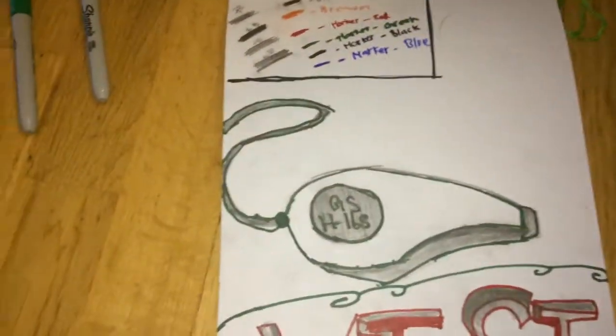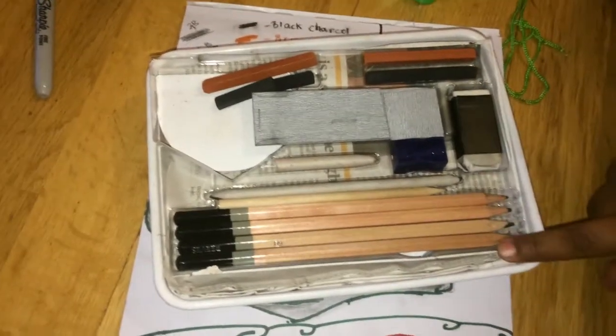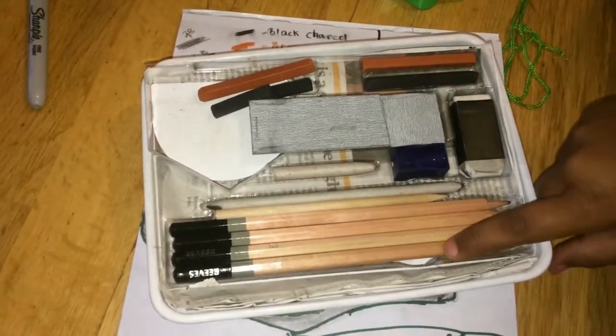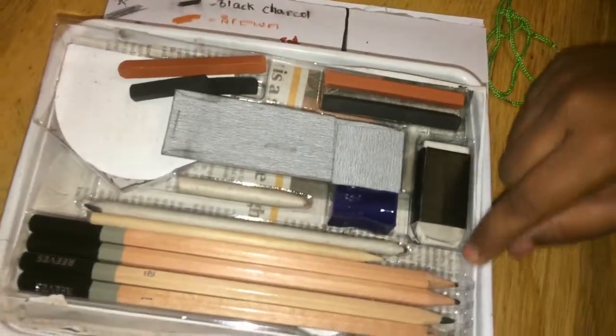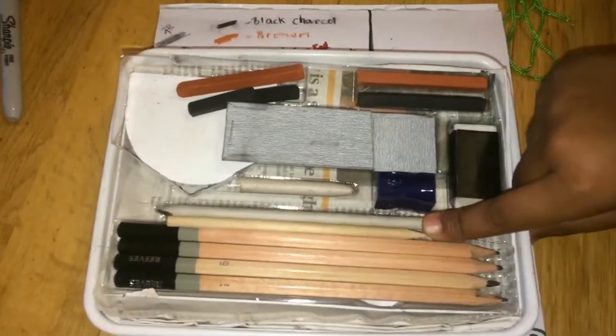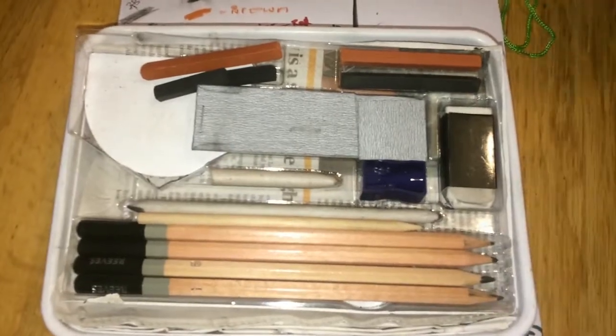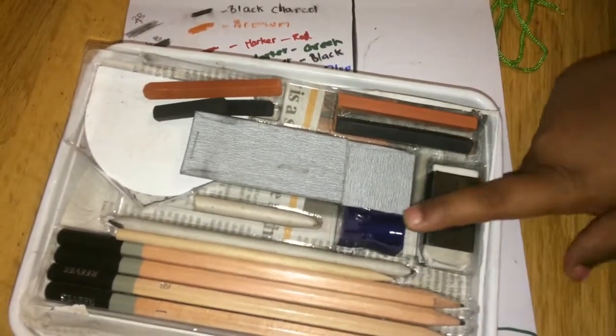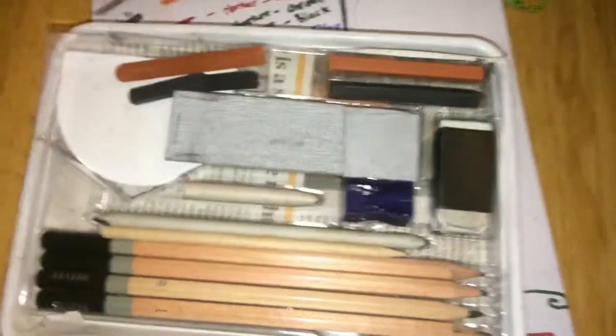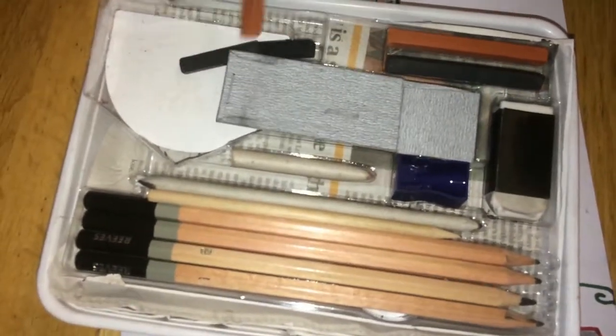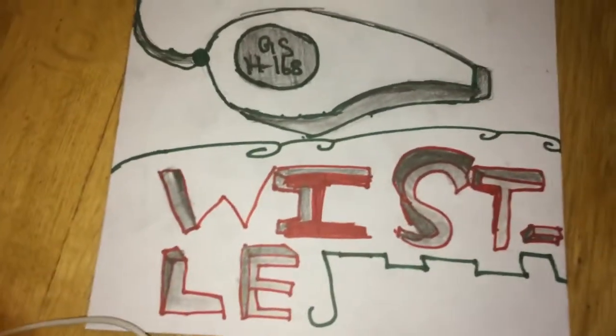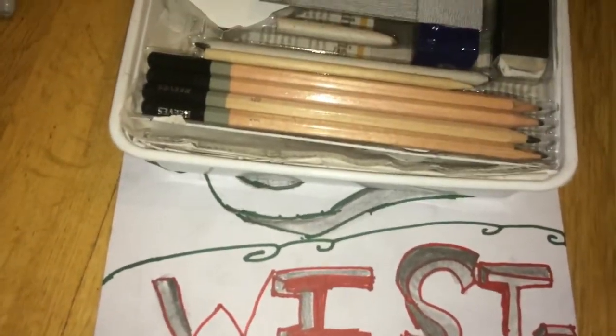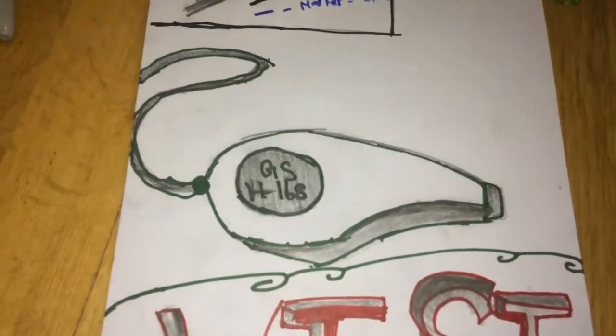I shaded it with these pencils: HB, 6B, 2B, and 4B pencils. And I used this to smudge it, some rubber and sharpener to sharpen the pencils. And I got charcoal. I'll just use something over here to design it like this one in 3D. Let's get started.